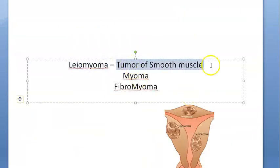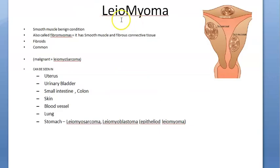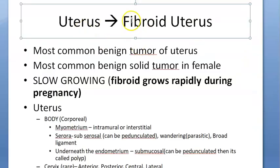Leiomyoma means tumor of smooth muscle. When it happens in the uterus, you call it uterine leiomyoma or fibroid. Basically, leiomyoma is a benign condition of the smooth muscle. When it happens in the uterus, that is when we use the word fibroid uterus or uterine leiomyoma.